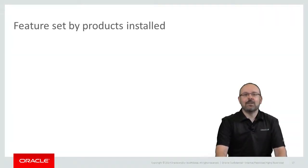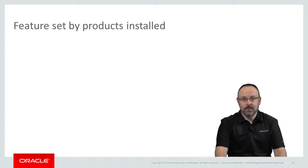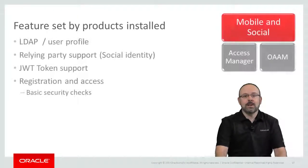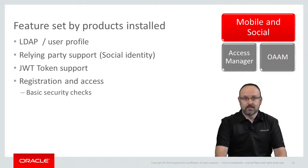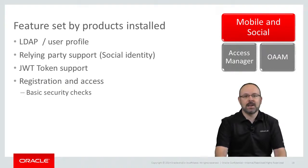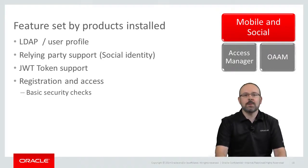As you may guess, the actual features you will get from OAMMS depend on the other Oracle IDM products you will install alongside. OAMMS, however, can be installed in standalone mode. It can integrate with LDAP servers on its own and you can use it as the relying party for internet-based identity services — this is called social identity in OAMMS parlance. In addition, OAMMS fully supports JWT tokens and can perform basic security checks in the context of device registration and access.